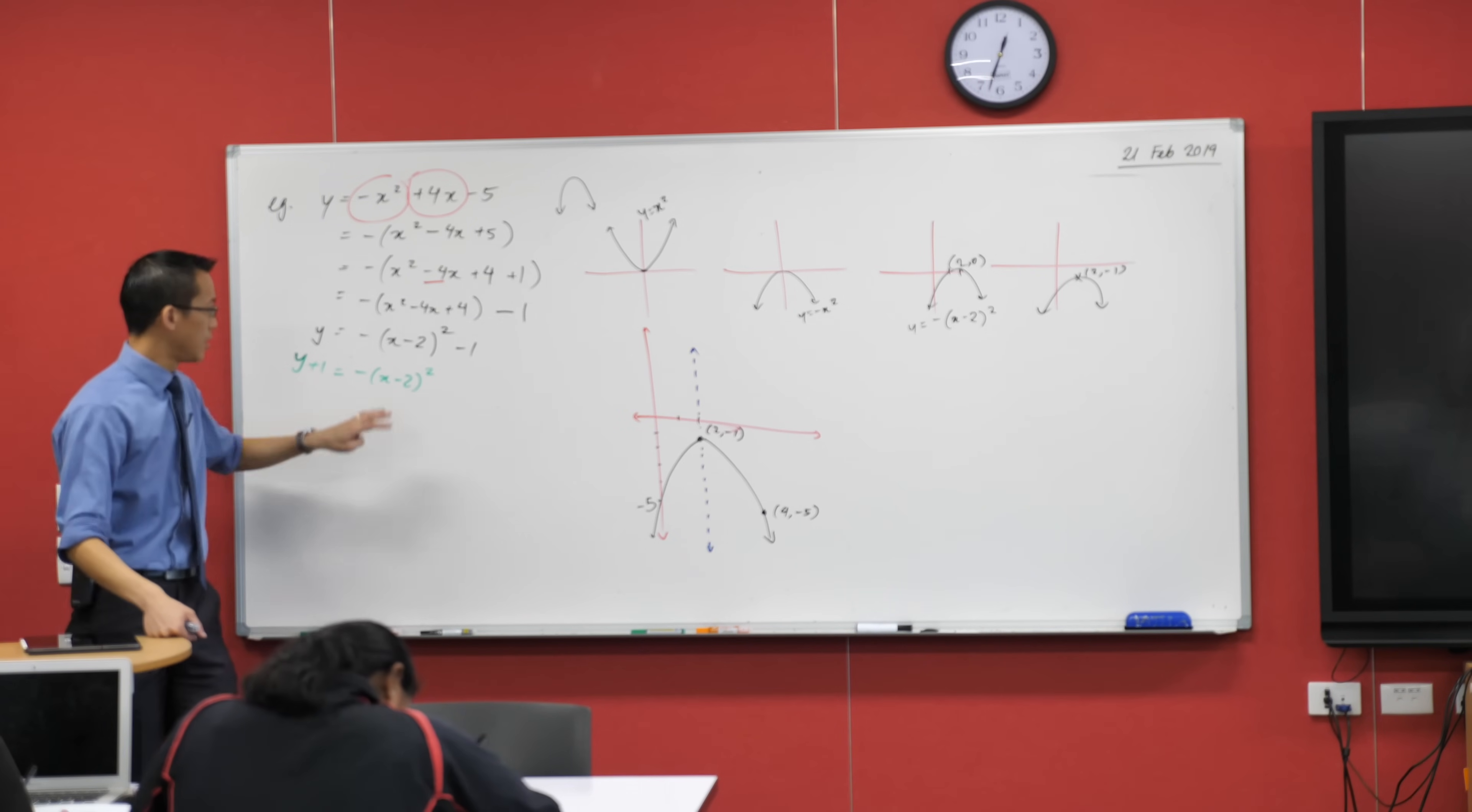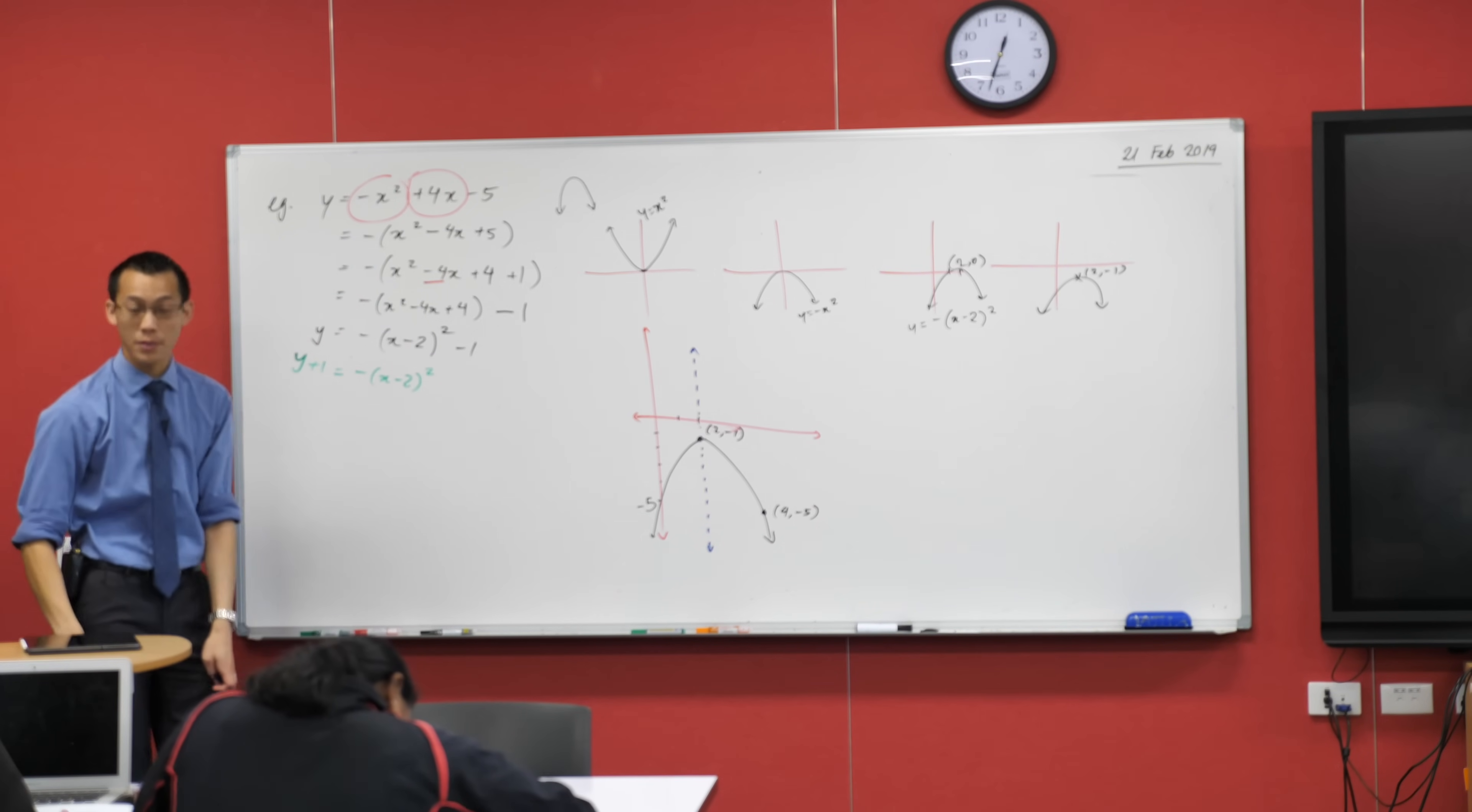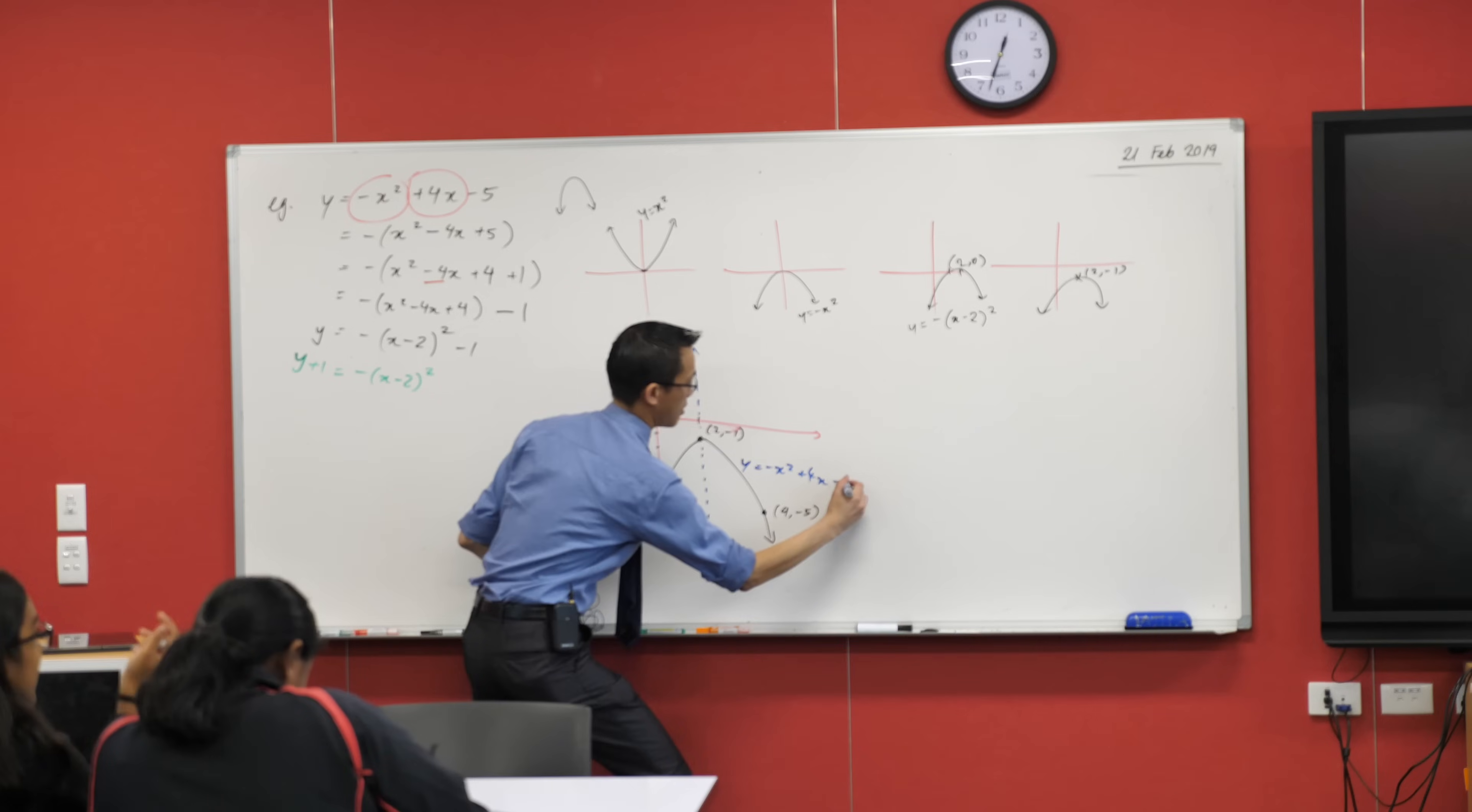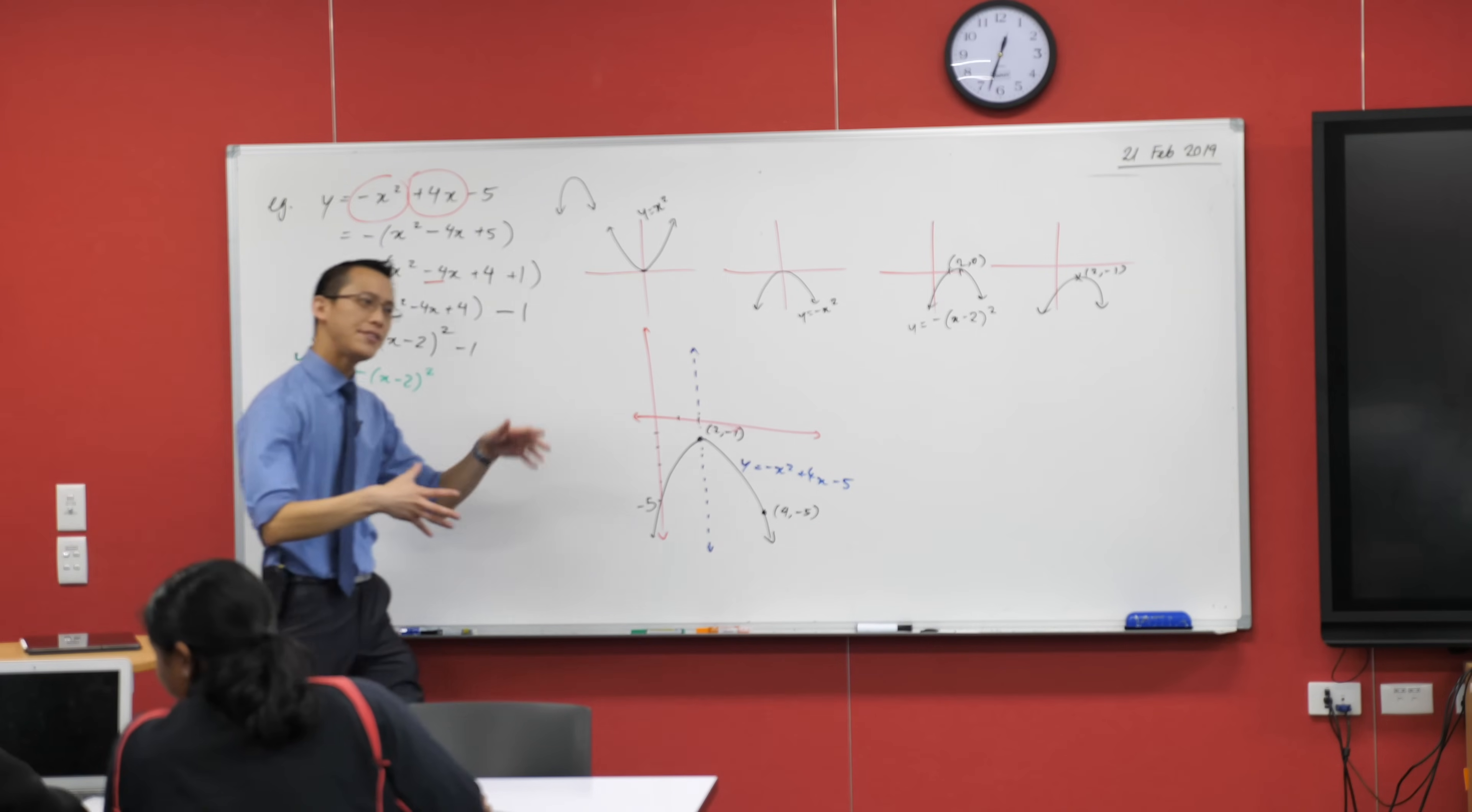Does that make sense? This is actually what we call vertex form of the parabola, because when you look at it, you're like, there's the vertex, (2,-1). That's the way I would read it. Probably should label that equation as well: -x² + 4x - 5.